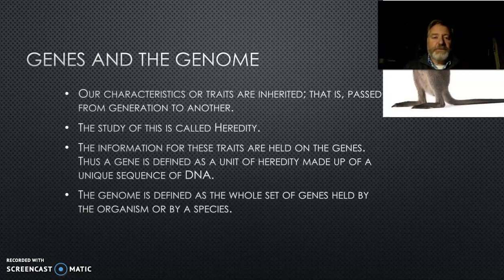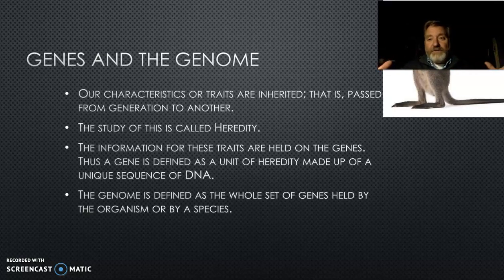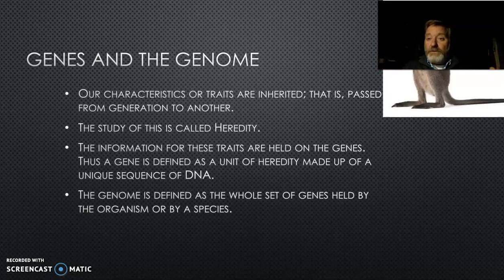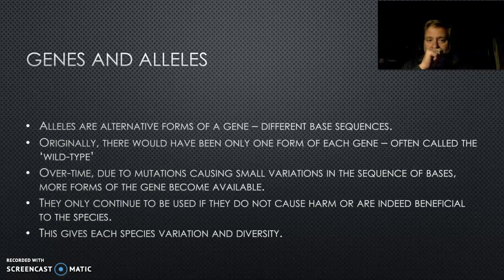We talk about a genome as being all of the genes of a particular individual or organism. You can also talk about the genome of a species, which is broader because we have lots of variation for each gene. This is called the study of heredity — looking at how things are inherited. Alleles are essentially alternative forms of a gene.